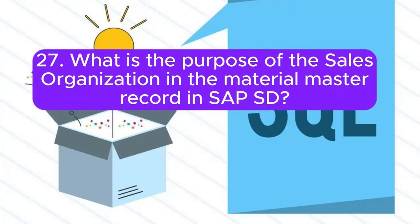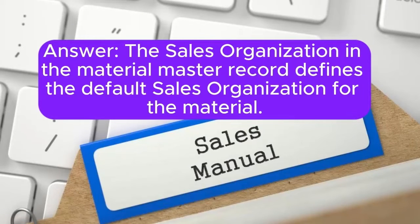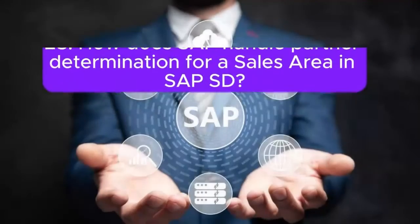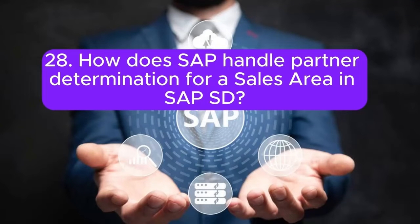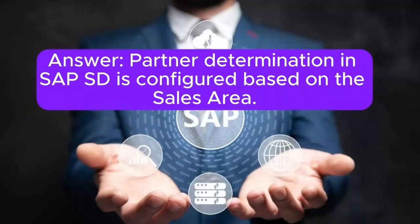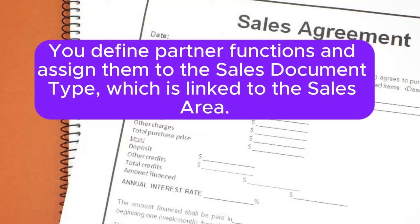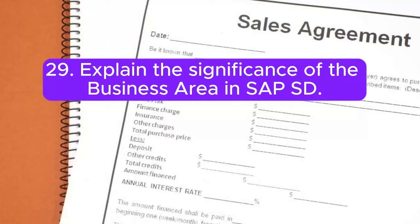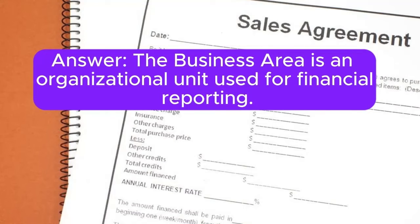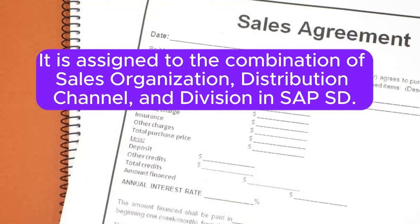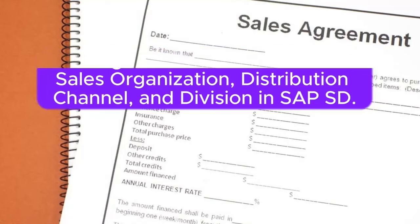Question 27: What is the purpose of the sales organization in the material master record in SAP SD? Answer: The sales organization in the material master record defines the default sales organization for the material. It is used during sales document processing. Question 28: How does SAP handle partner determination for a sales area in SAP SD? Answer: Partner determination in SAP SD is configured based on the sales area. You define partner functions and assign them to the sales document type, which is linked to the sales area. Question 29: Explain the significance of the business area in SAP SD. Answer: The business area is an organizational unit used for financial reporting. It is assigned to the combination of sales organization, distribution channel, and division in SAP SD.